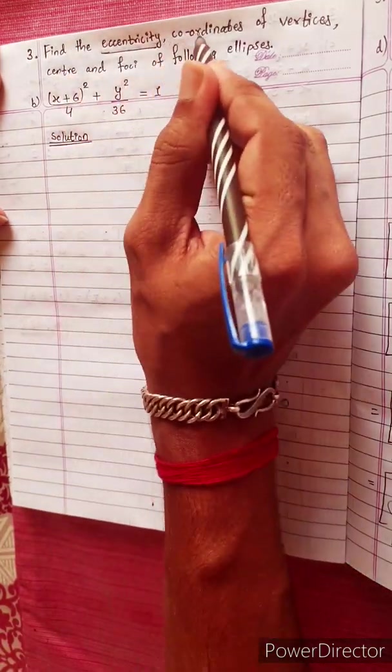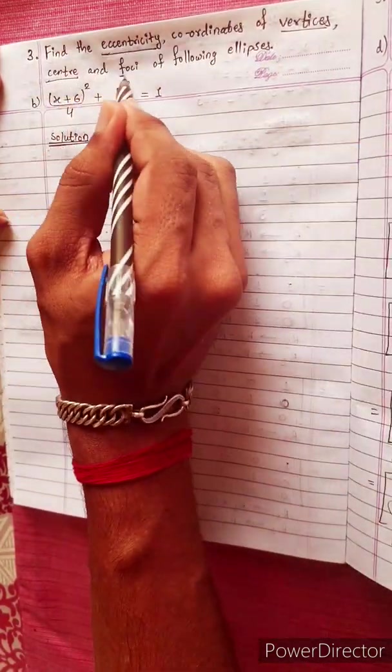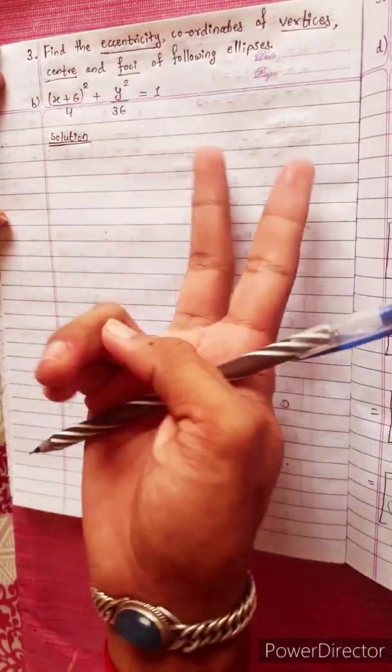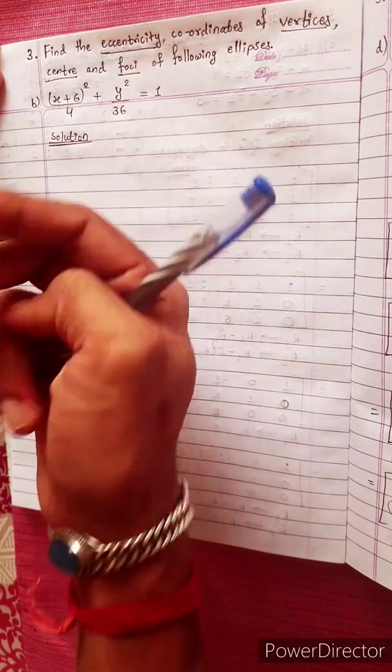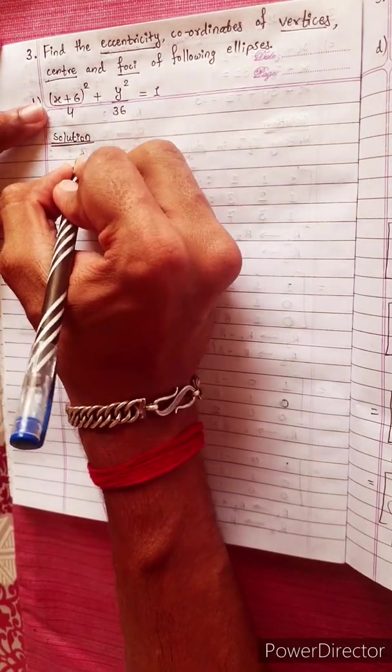Find the eccentricity, vertices, center, and foci of the ellipse. Write the equation from the given information.